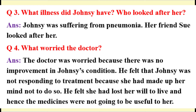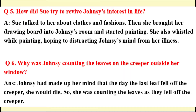Question 3: What illness did Johnsy have? Who looked after her? Answer: Johnsy was suffering from pneumonia. Her friend Sue looked after her. Question 4: What worried the doctor? Answer: The doctor was worried because there was no improvement in Johnsy's condition. He felt that Johnsy was not responding to treatment because she had made up her mind not to do so — she had lost her will to live and hence the medicines were not going to be useful.